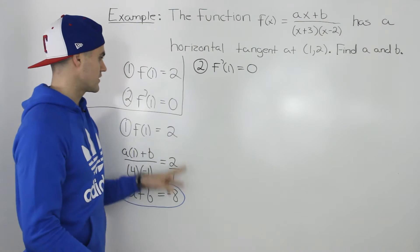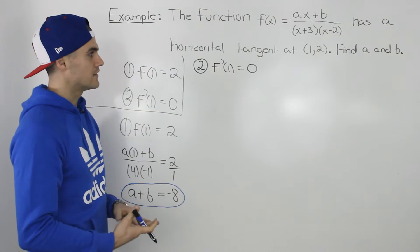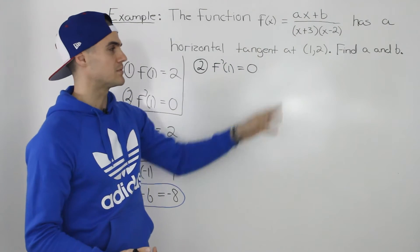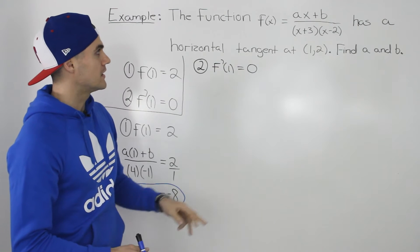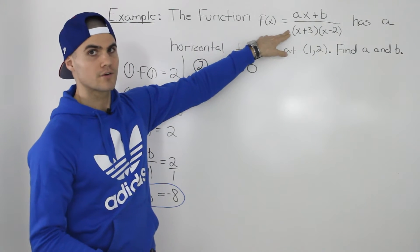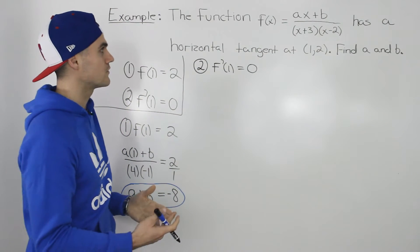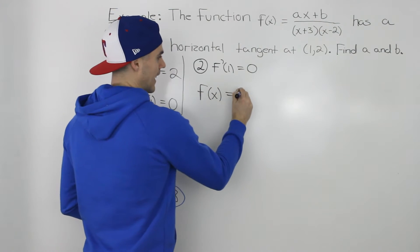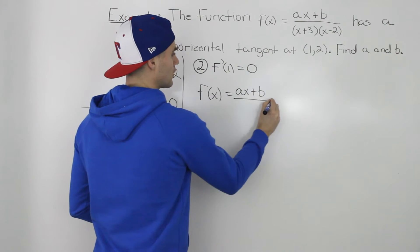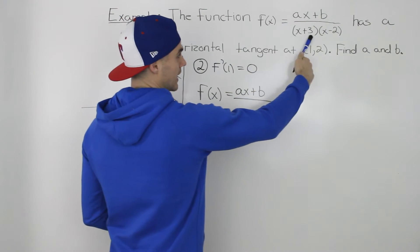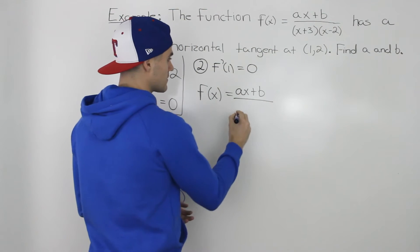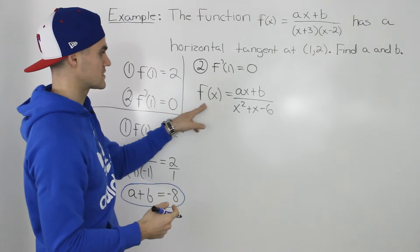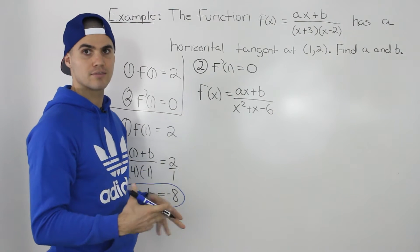The second equation requires us to first find the derivative of this function with constants a and b in it, using the quotient rule since it's a rational function. Before applying the quotient rule, expand the denominator: the numerator stays as ax + b, and (x + 3)(x - 2) foiled out gives x² + x - 6. Now we apply the quotient rule to find the derivative.